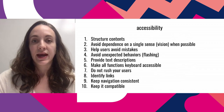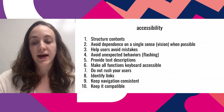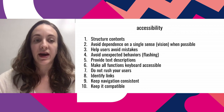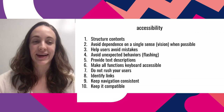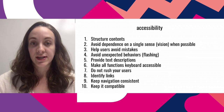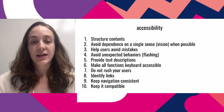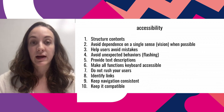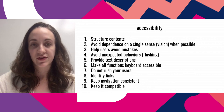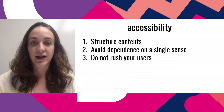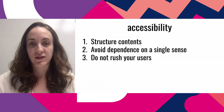I pulled the top 10 rules on accessibility practices from the Guide to the Internet for the EU. Those are: structure contents; avoid dependence on any one single sense, sight in particular; help your users avoid mistakes and show them how to correct them; avoid unexpected behaviors like flashing; provide text descriptions where possible; make all functions keyboard accessible; avoid rushing your users; identify links and where they'll take you; keep navigation UI consistent; and keep your experience compatible across devices and browsers.